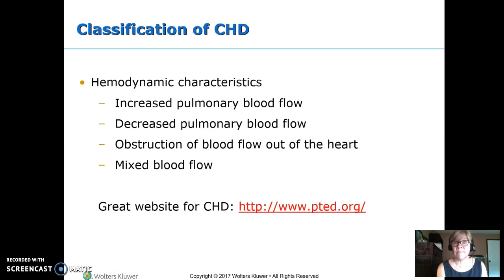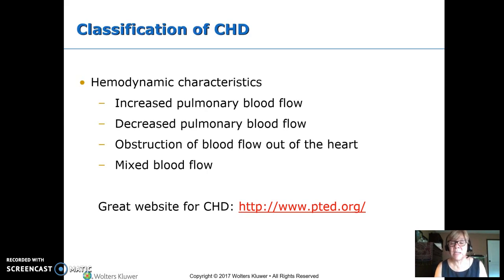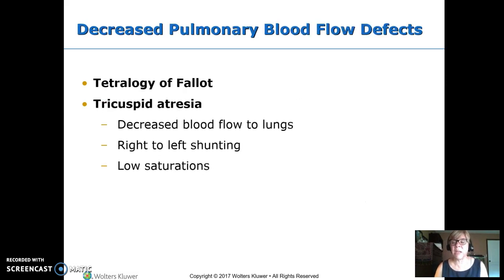decreased pulmonary blood flow, not sending it to the lungs; obstruction, where blood has trouble getting out of the heart; or mixed blood flow, where it's mixing inside the heart. At the bottom here, PTED.org is a great site made by Johns Hopkins University and Cove Point that shows you the abnormals — you can scroll over them and it shows what normal should be versus the abnormal.